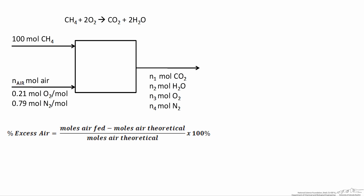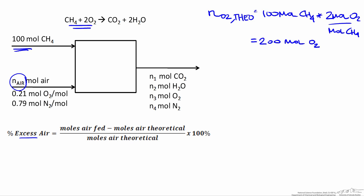We'll start by using the definition of percent excess of air to find how much air is being fed to the reactor. The definition of percent excess of air is the moles of air fed minus the moles of air theoretically required to consume all of the fuel, divided by the theoretical moles of air. Here we can see that for every mole of methane consumed, we need 2 moles of oxygen. We can find the amount of oxygen needed by taking our 100 moles of methane and multiplying by the molar ratio, giving us 200 moles of oxygen required to completely consume all the methane.